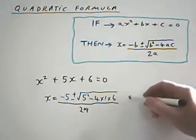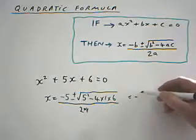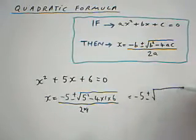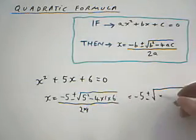That equals, so simplify this, minus 5 plus or minus the square root, 5 squared is 25.